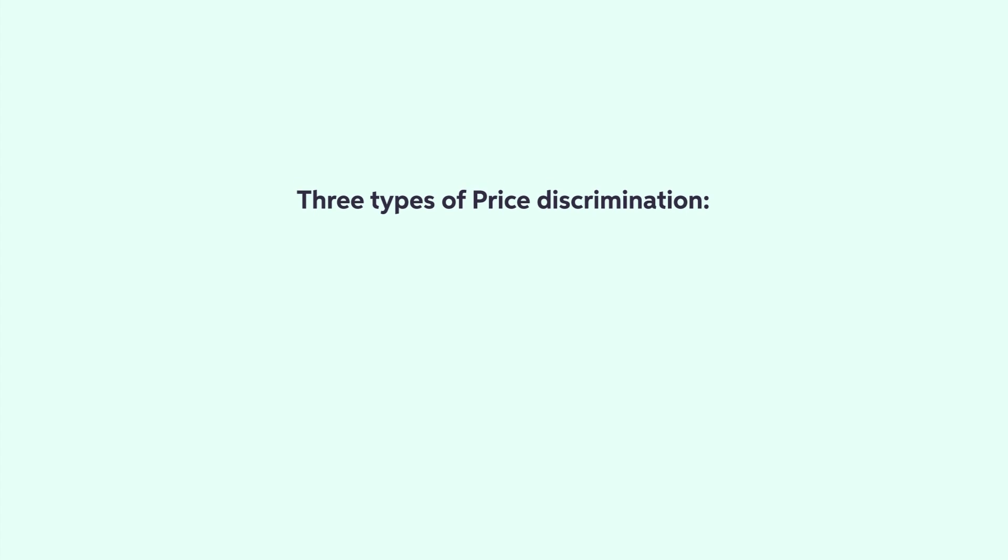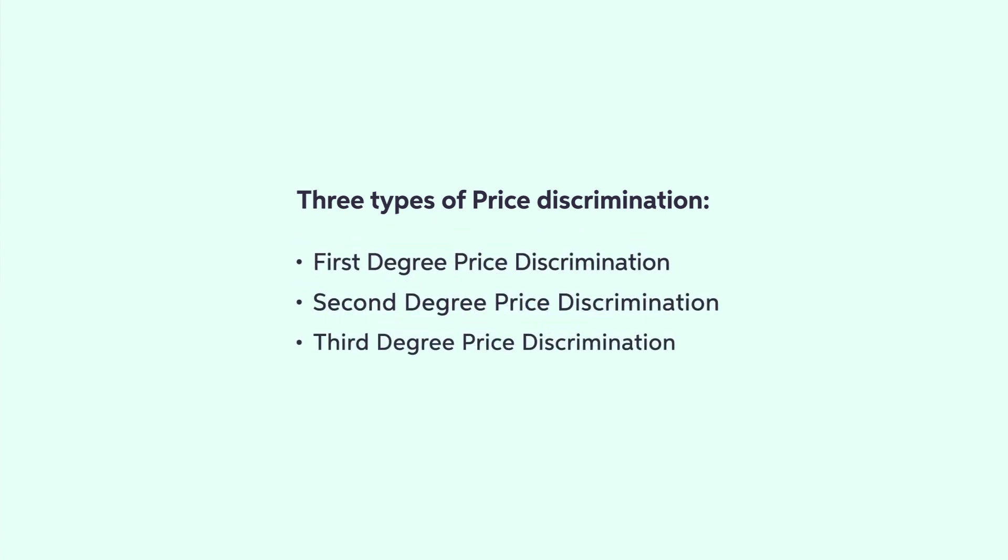There are three types of price discrimination: first, second, and third degree, along with the hurdle model. Monopolists are more profitable when they can practice price discrimination, but price discrimination can also be more efficient at the social level.